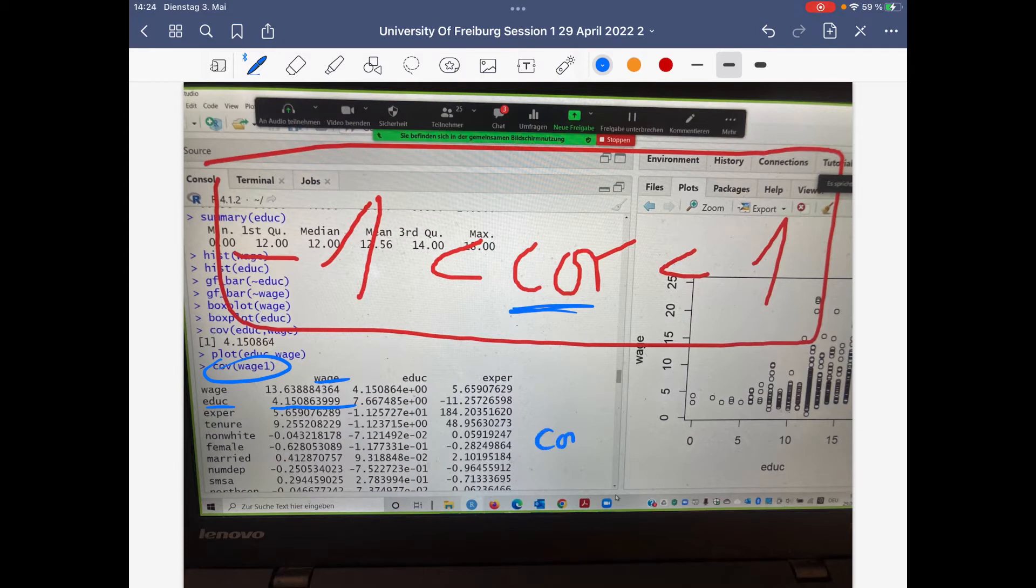If you typed in cor and wage one, you get the correlation coefficients that are standardized between minus 1 and plus 1.